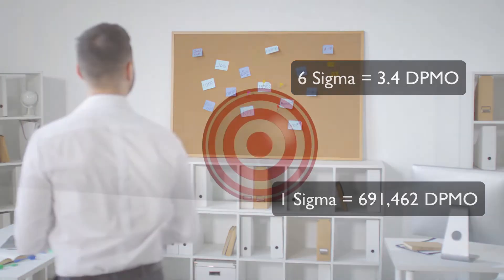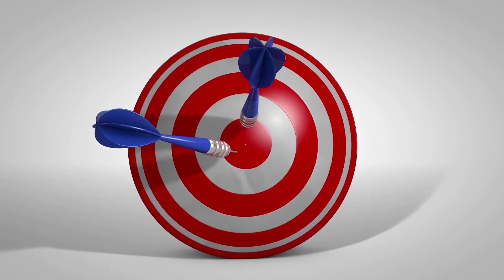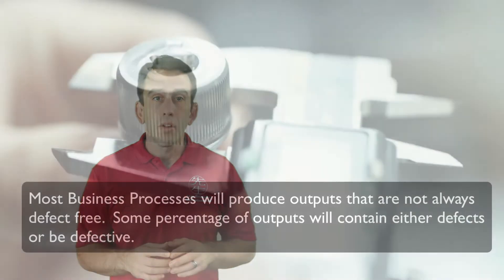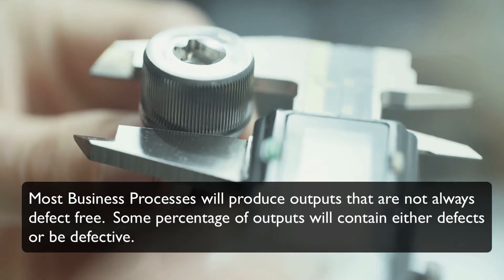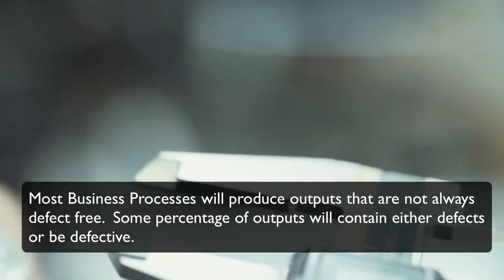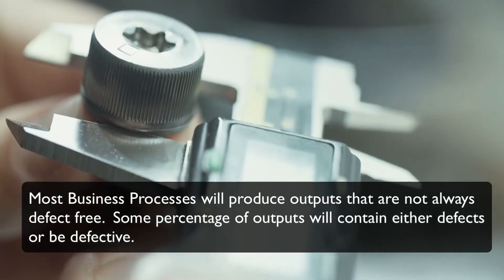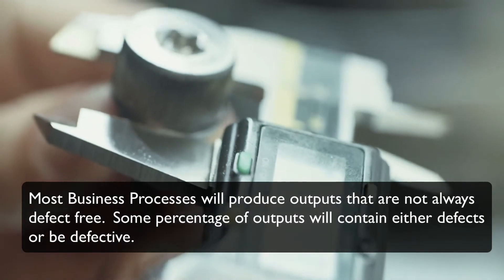For example, let's say we were playing darts. A bullseye would represent a perfect throw. Because none of us are perfect, we would hit a few bullseyes and a few would hit other points on the board. Most business processes are similar to this. They will produce outputs that are not always defect-free.